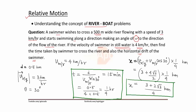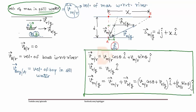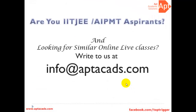You have seen how simple the problem becomes when understood at the concept level. The key point is understanding that velocity of man in still water is velocity of man with respect to the river. Using vector notation makes the problem easy to solve. This same approach applies to the aeroplane-and-wind problem: velocity of the aeroplane in still air is simply the velocity of the aeroplane with respect to air.